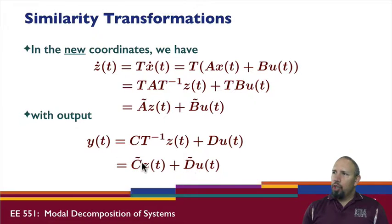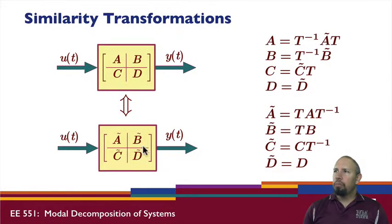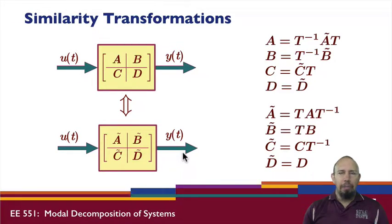Similarly, for the output equation, we get a new C and a new D. We have this relationship between the two sets: A, B, C, D and A tilde, B tilde, C tilde, D tilde. The inputs u and the outputs y are the same, unchanged through this process. Here are the relationships between the two different sets of coordinates.